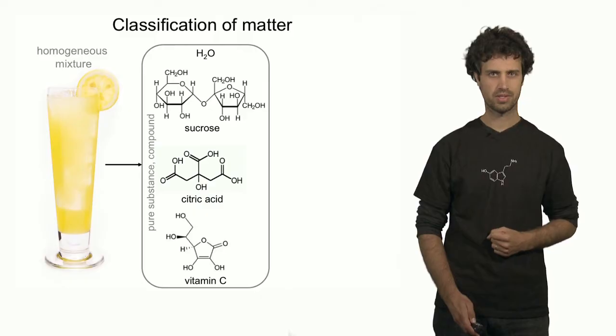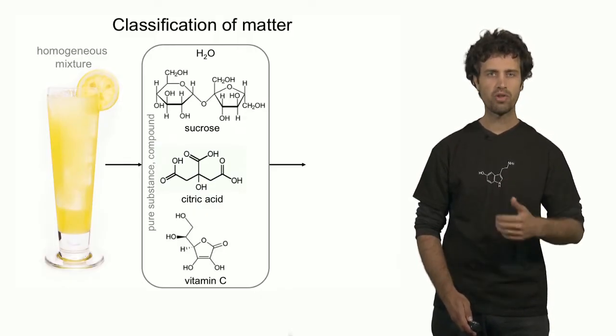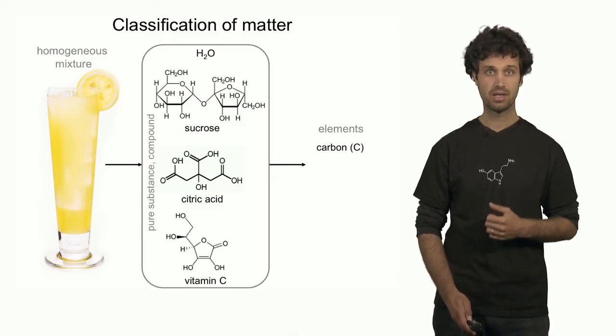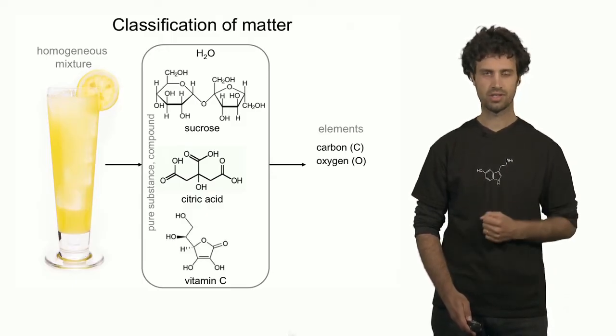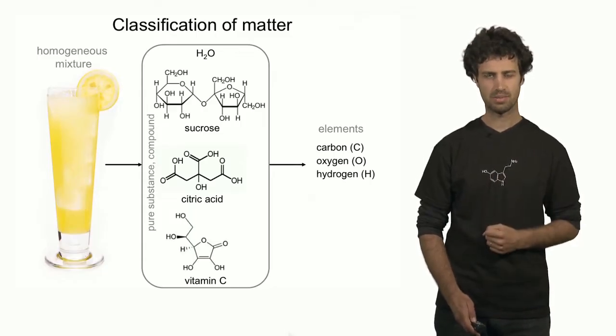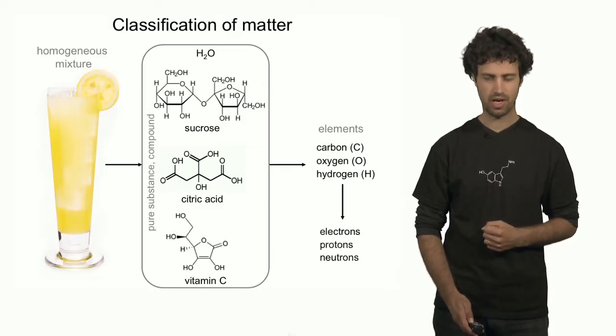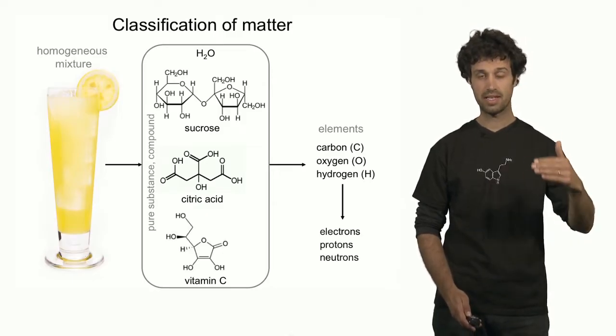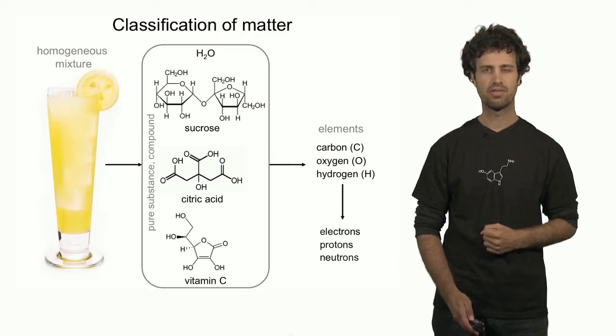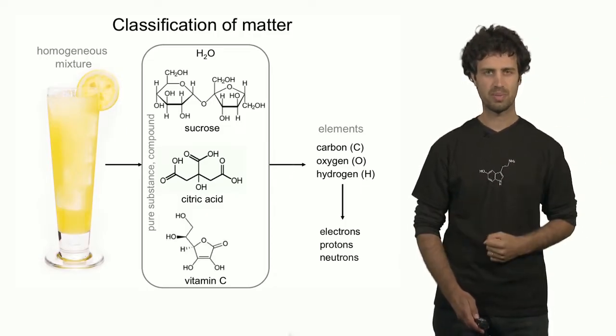All these pure substances are classified as compounds. Compounds contain multiple elements. In this case carbon, oxygen and hydrogen. Elements are also called atoms. And atoms are composed of electrons, protons and neutrons. So we see that in a classification of materials, the flow goes all the way from mixtures down to fundamental particles.